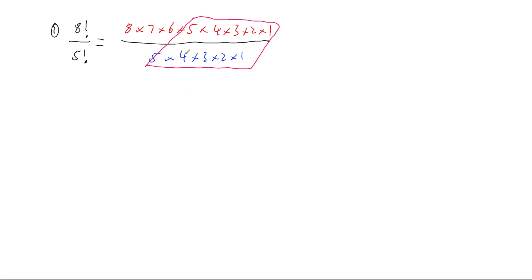The rest of it goes 5, 4, 3, 2, 1. So 1 divided by 1 cancels down to 1, 2 divided by 2 cancels down to 1, 3 divided by 3 cancels down to 1, 4 divided by 4 cancels down to 1. So everything more or less cancels out, and we're left with 8 times 7 times 6. And so we can now work out the answer to this, and we get 336.